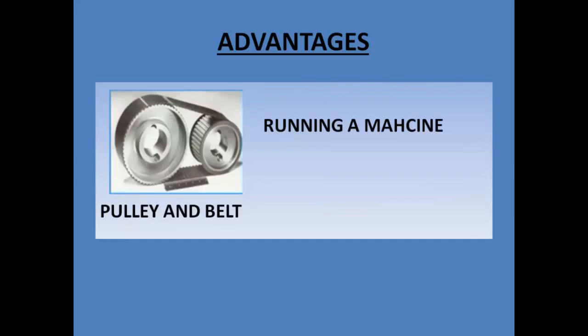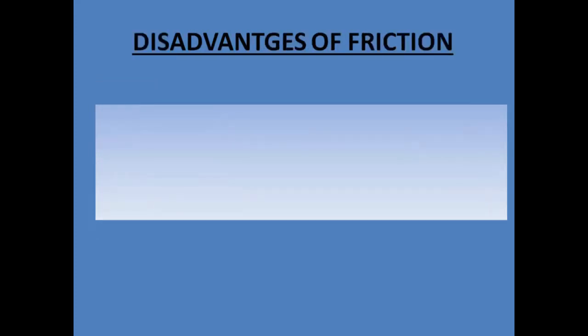It is the force of friction between the belt and the pulley that helps in rotating various parts of a machine. We have seen most of the advantages of friction. Let us now see disadvantages of friction.